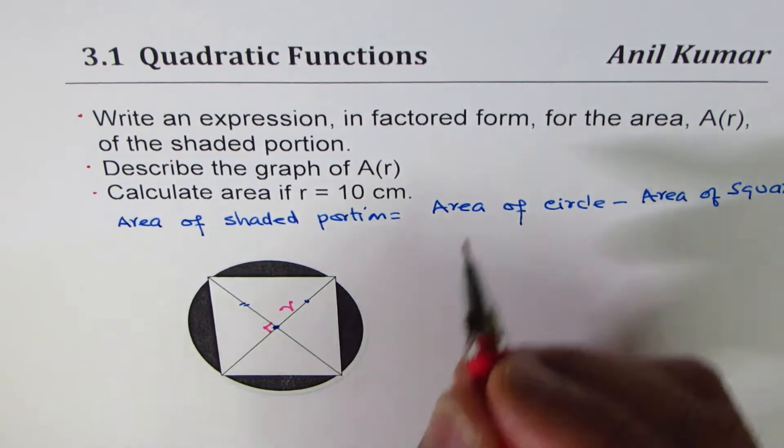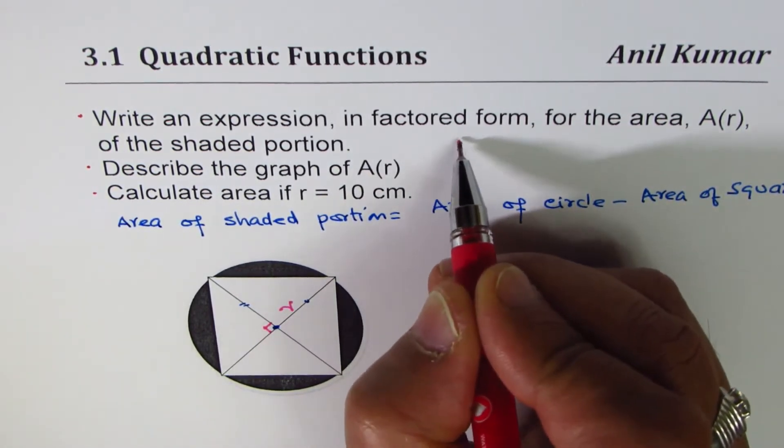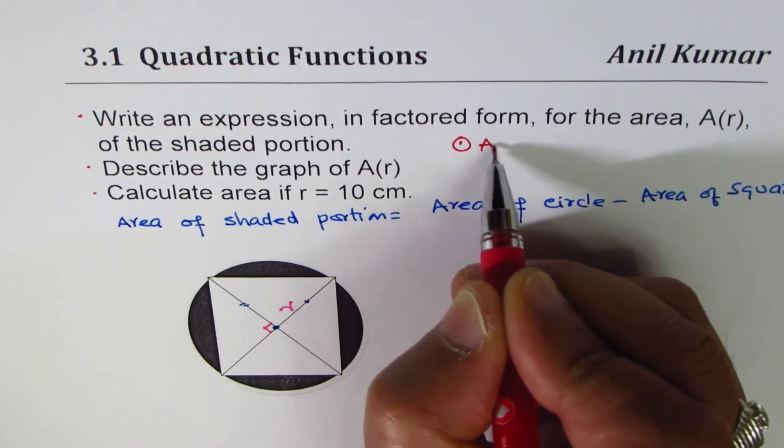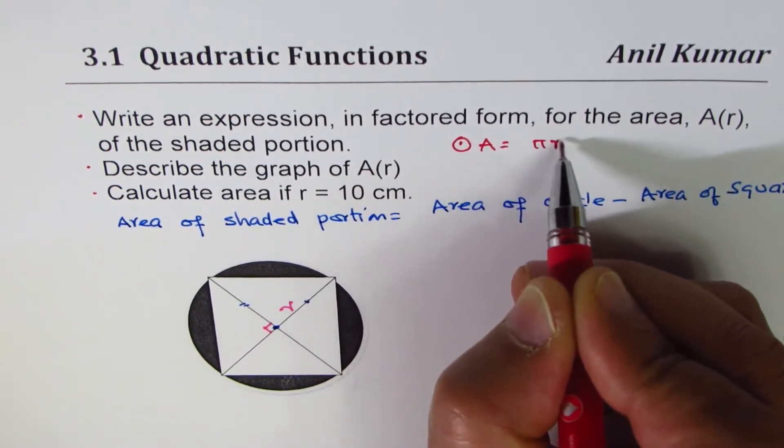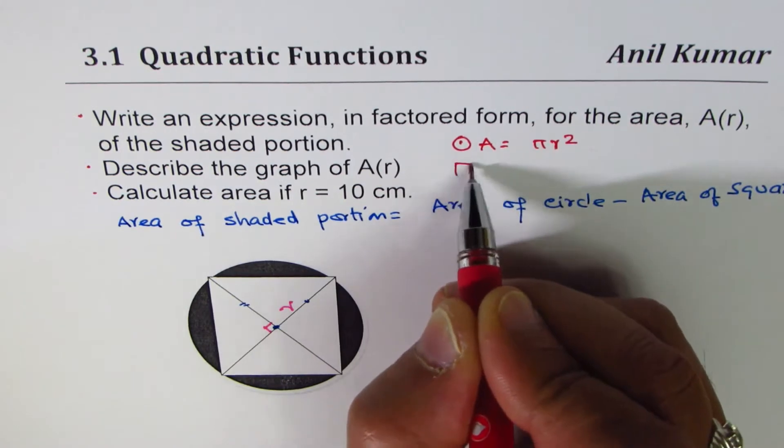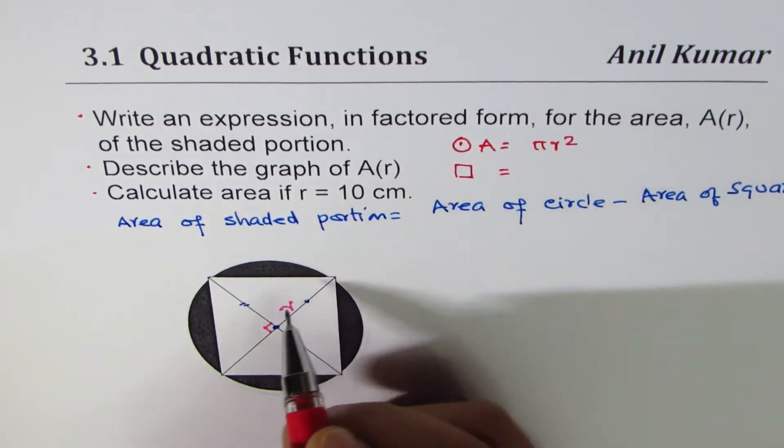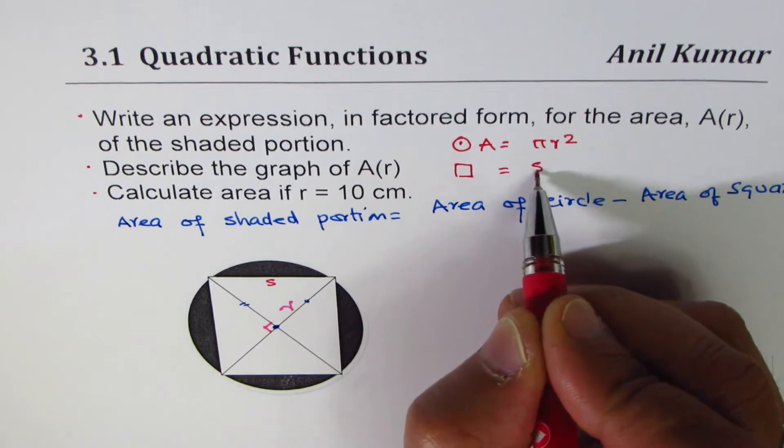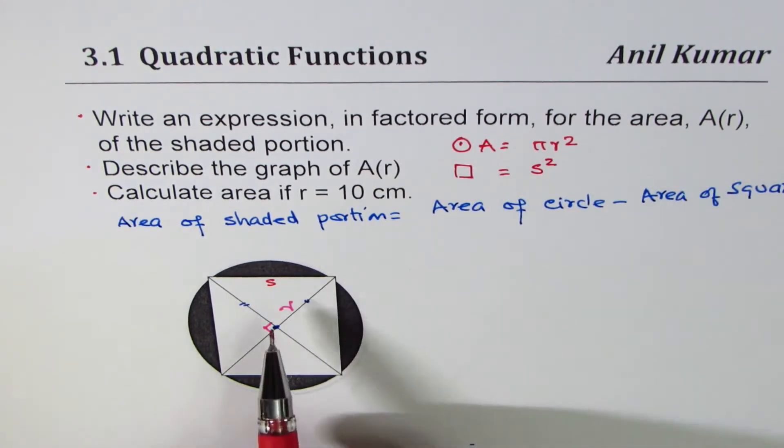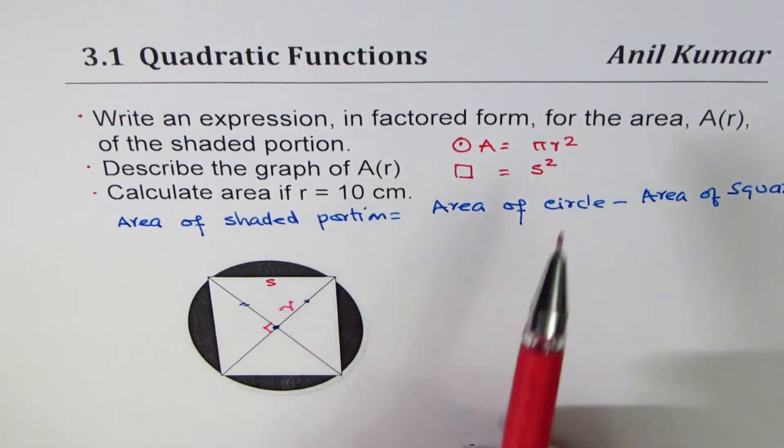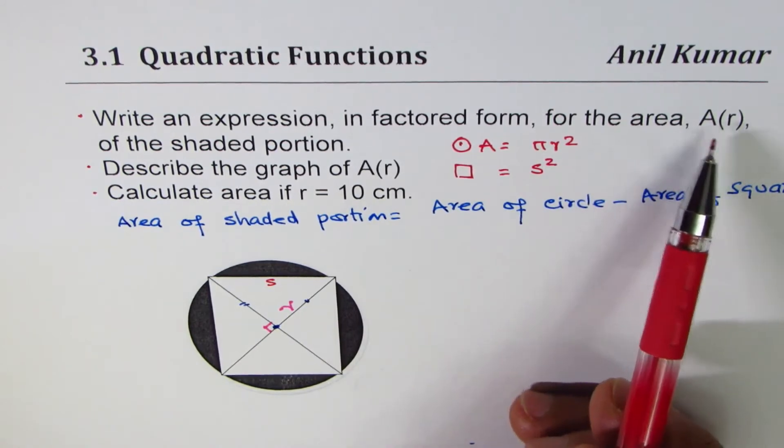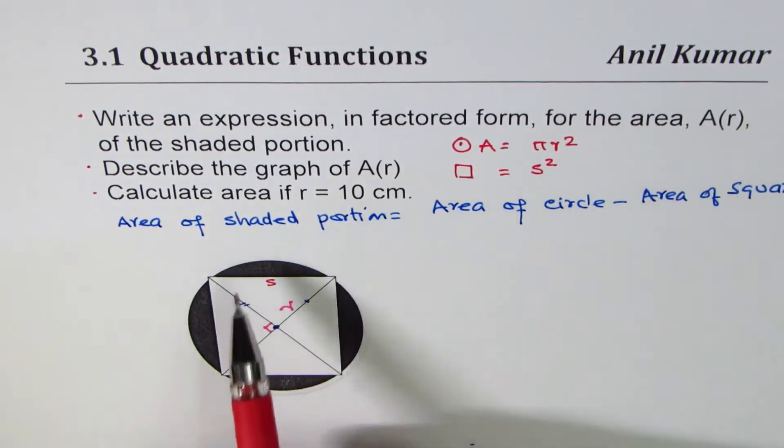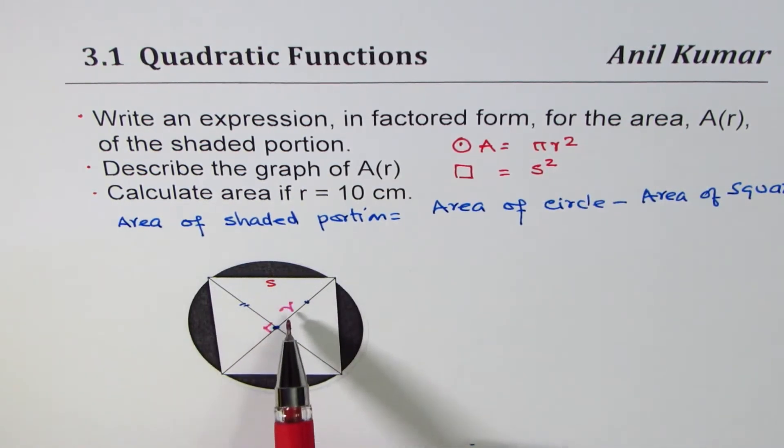The formula for area of circle is πr². For a square, if the side length is s, then it is s². Since we need area in terms of radius, when we say A as a function of r, we have to write the side in terms of r. It is very important.